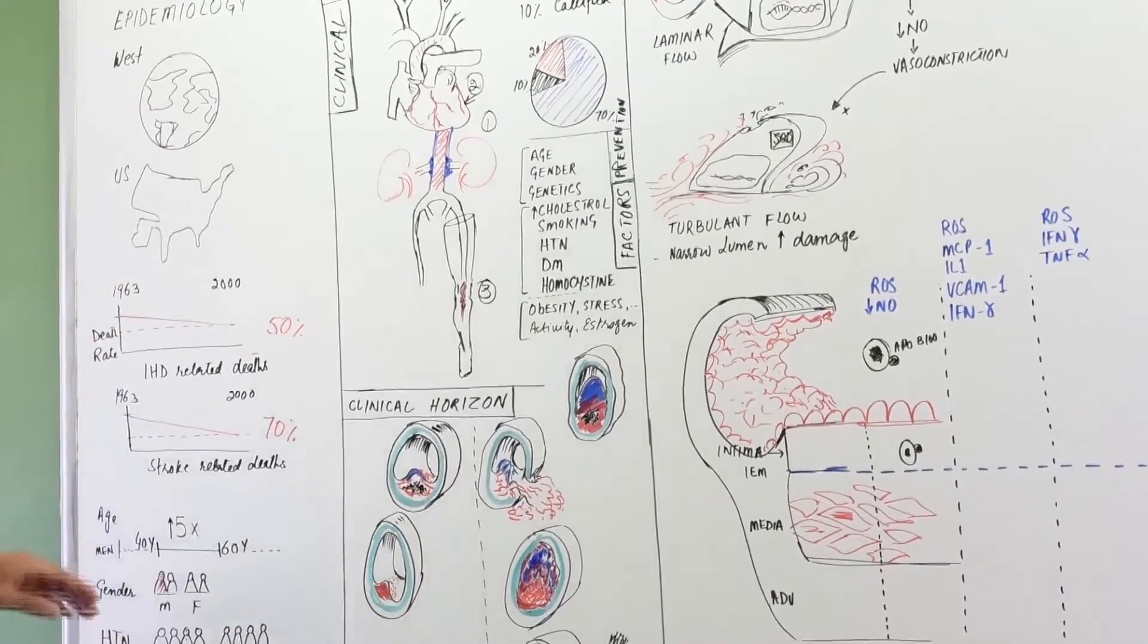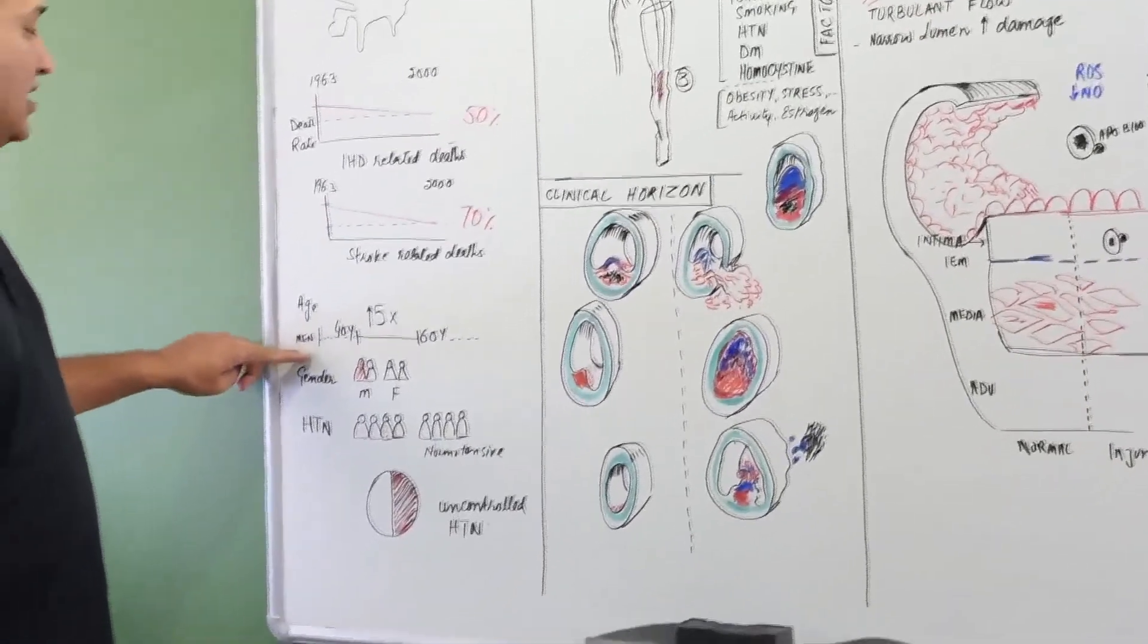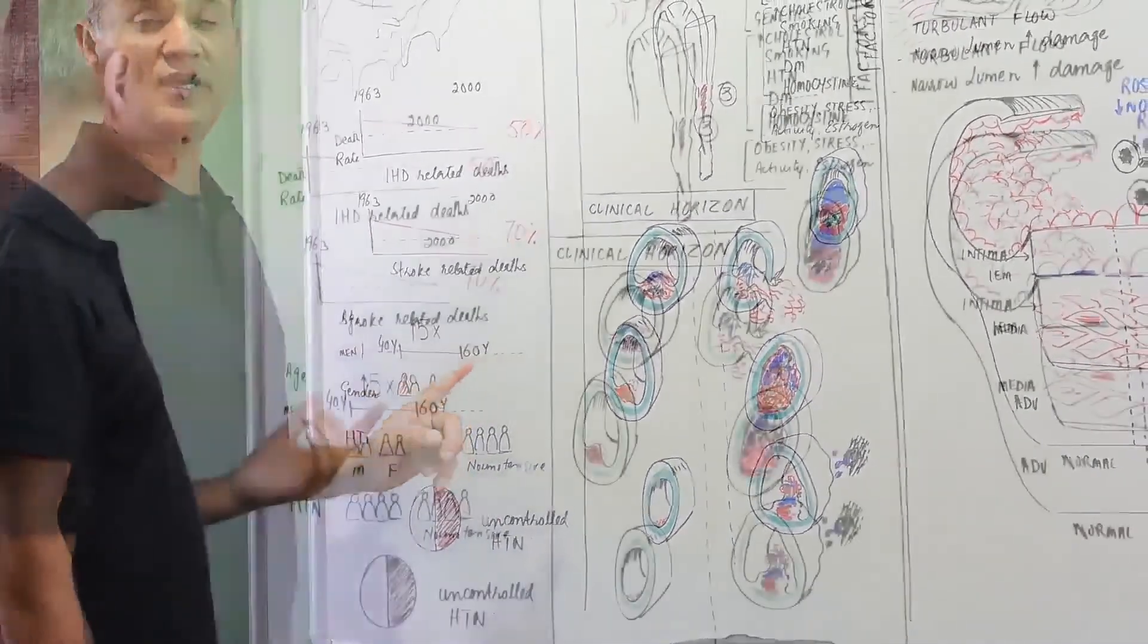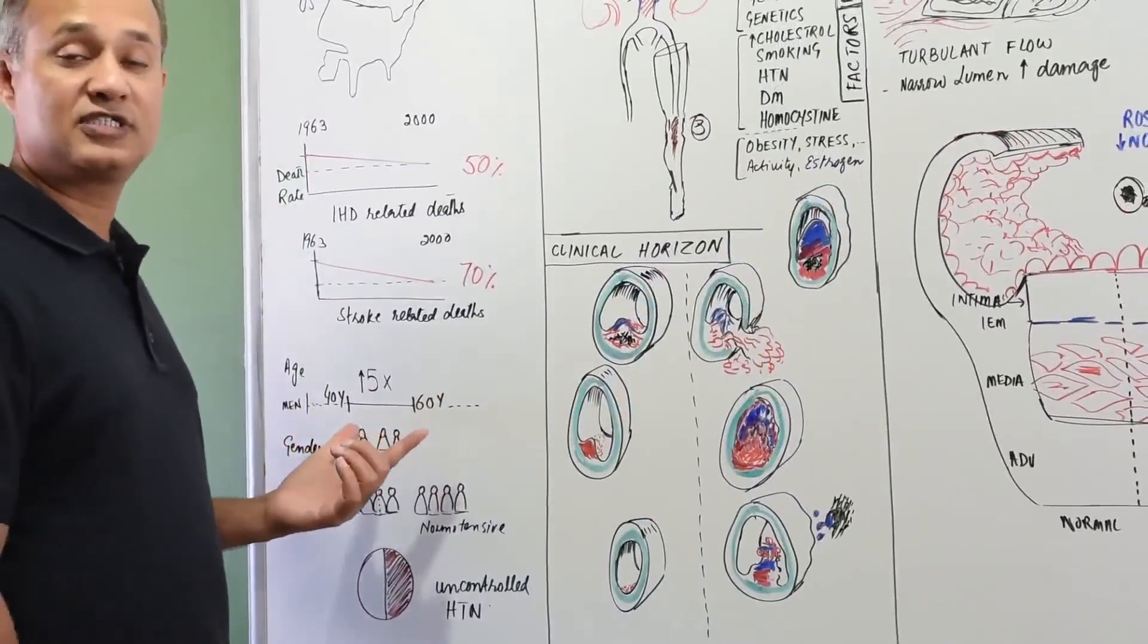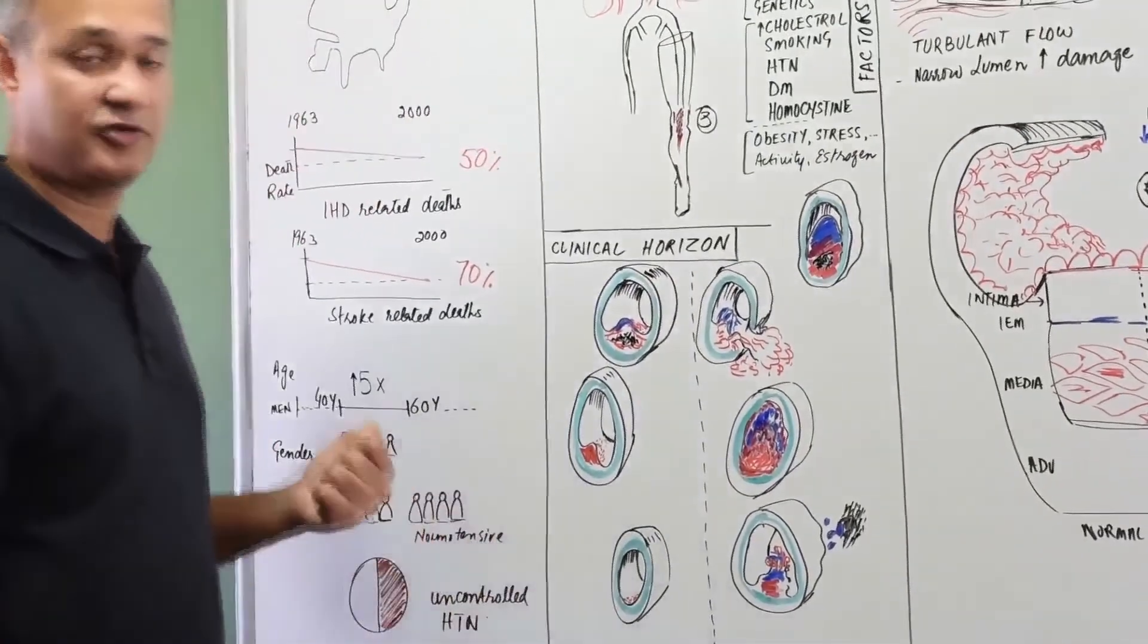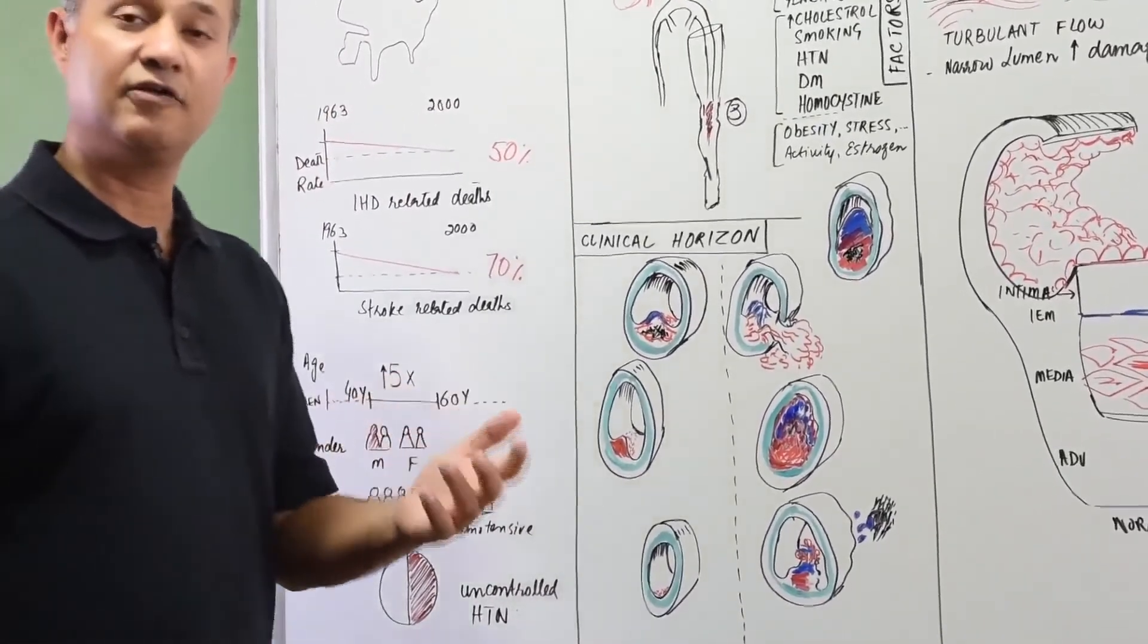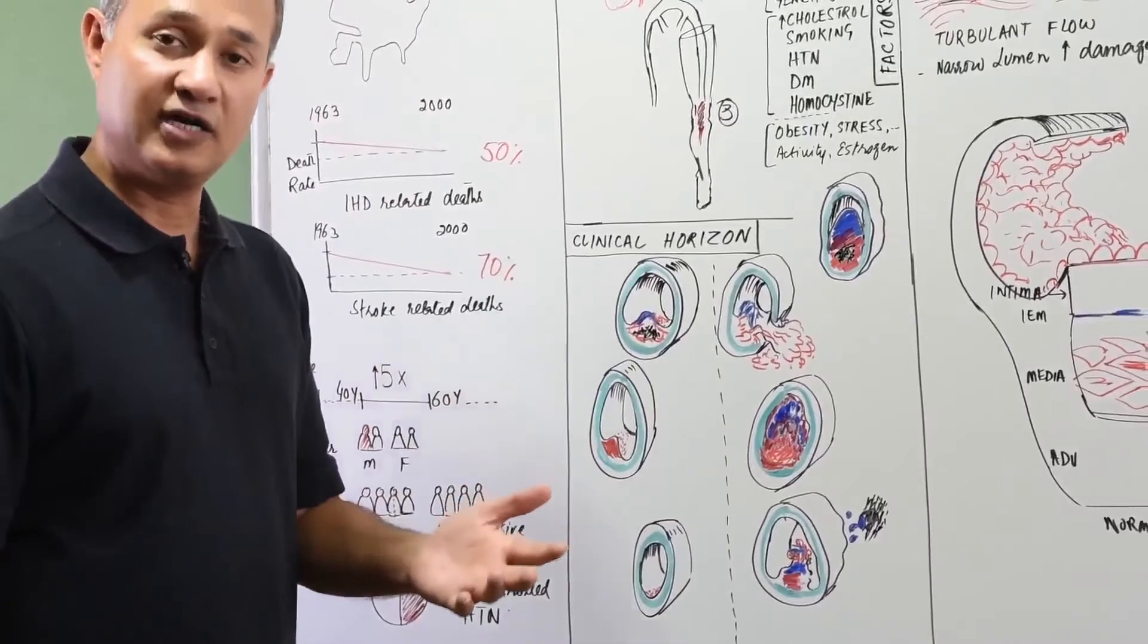Okay, so now let's see some more stats here. Men between the age of 40 to 60 have 5 times increased risk of developing atherosclerosis or accelerating it. That means increased factor for ischemic heart disease as well.